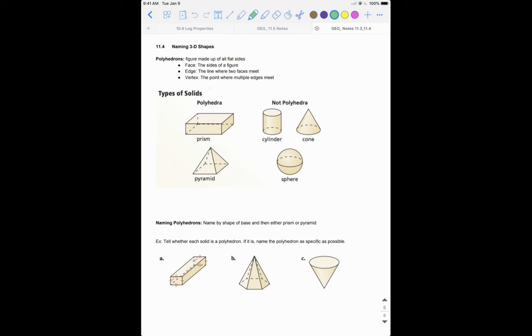Okay, so once we've decided whether it's a polyhedron or not a polyhedron, we can go down and figure out how we name. So our biggest thing here is that we want to name by the shape of the base. First we want to decide if it's a prism or a pyramid, then we want to name by the shape of the base.